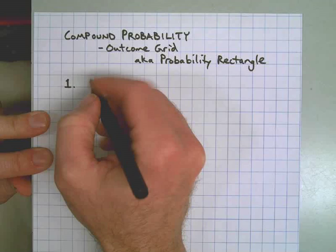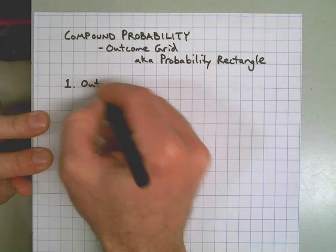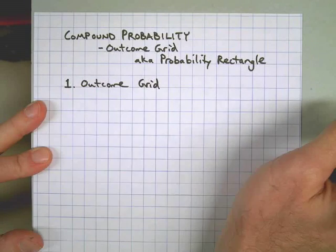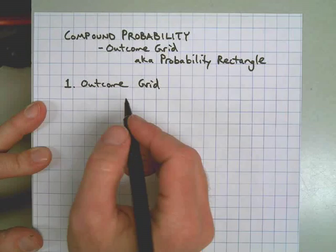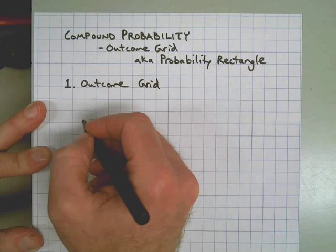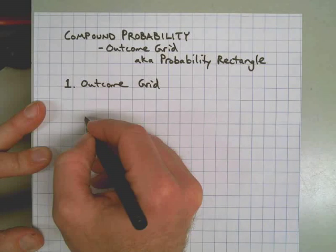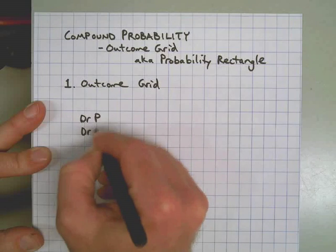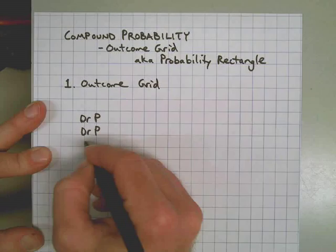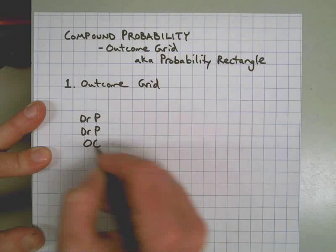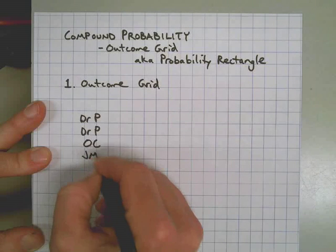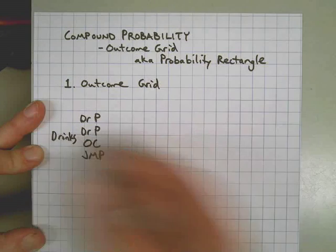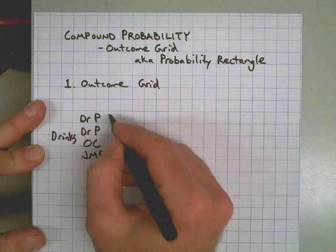It says draw an outcome grid to show what all of the possible snacking combinations are. Along one side, and it does not matter which side you choose, we have Dr. Pepper. He has another Dr. Pepper. The problem says he has two of them. He has an Orange Crush and a Jones Mashed Potato Soda. So these are the drinks. That's one side of our rectangle.